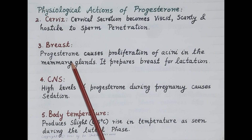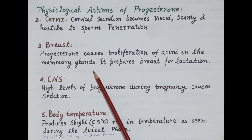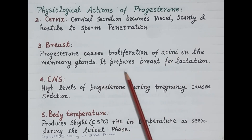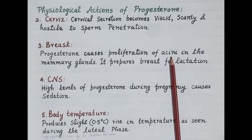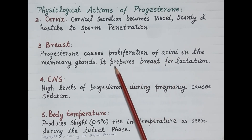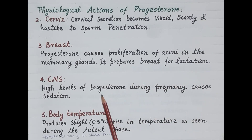Progesterone causes proliferation of acini in mammary glands. The main function of these acini is to secrete milk during pregnancy, so progesterone prepares the breast for lactation. Apart from this, high levels of progesterone during pregnancy cause sedation.